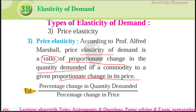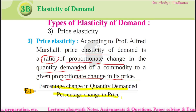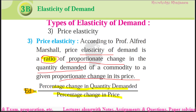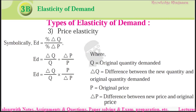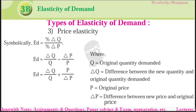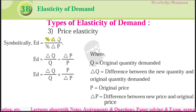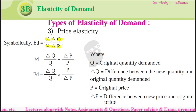Elasticity of demand is percentage change in quantity demanded divided by percentage change in price. Why divided by? Because we are going to find the ratio — how much change in quantity demanded with reference to percentage change in price. What is the formula? It is percentage change in quantity demanded divided by percentage change in price.